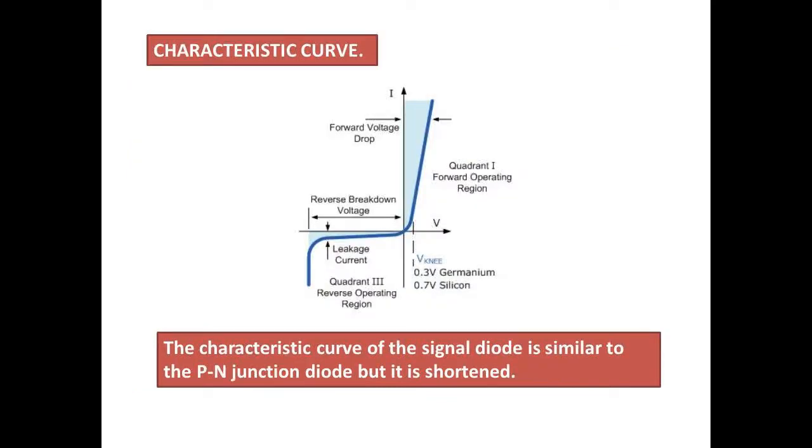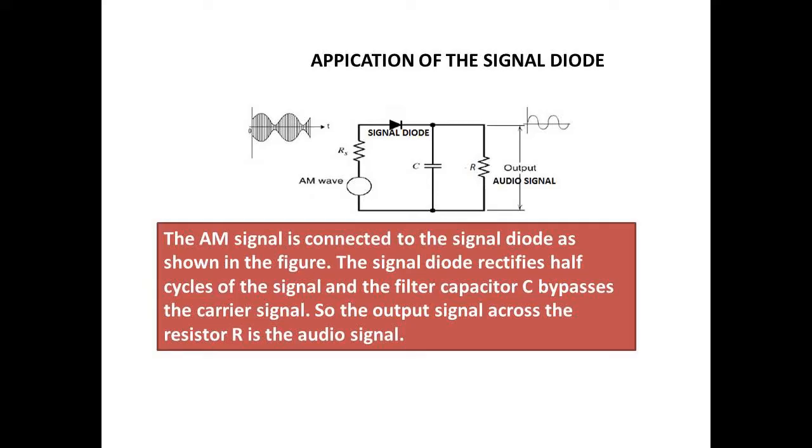Characteristic curve: The characteristic curve of the signal diode is similar to the PN junction diode. Application of the signal diode: The AM signal is connected to a signal diode as shown in the figure.